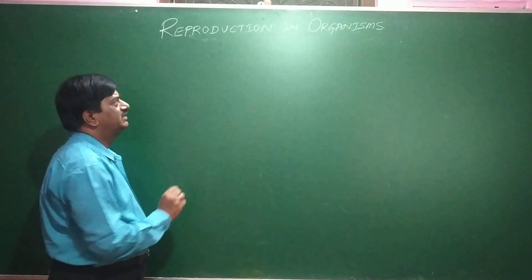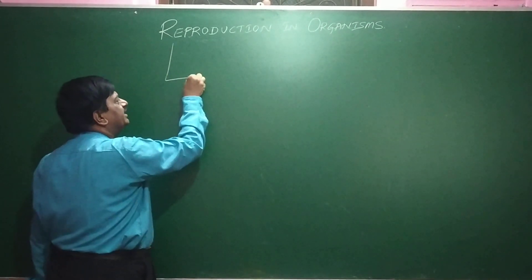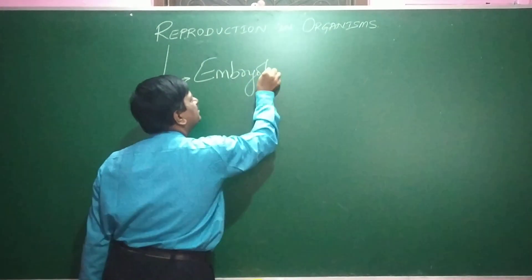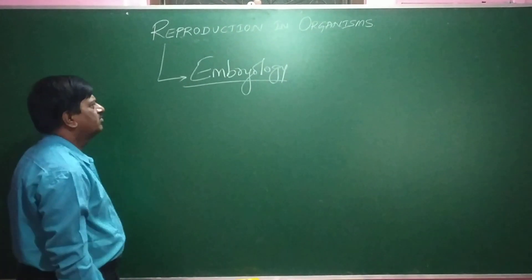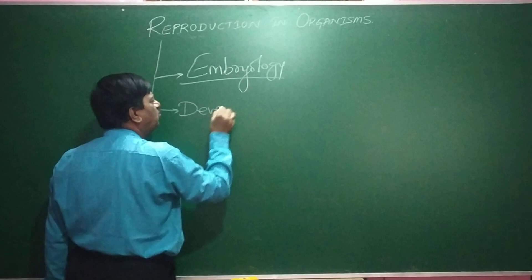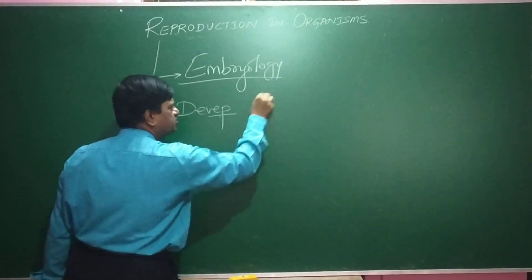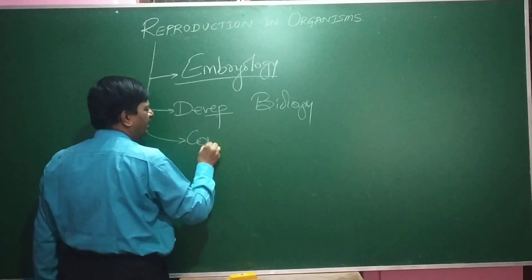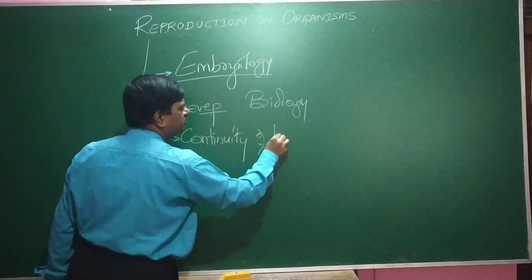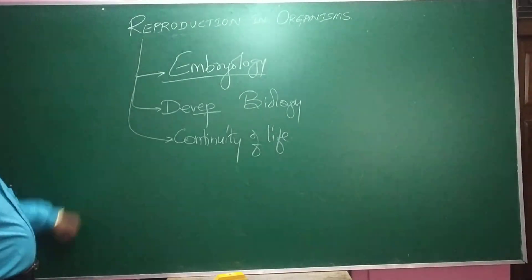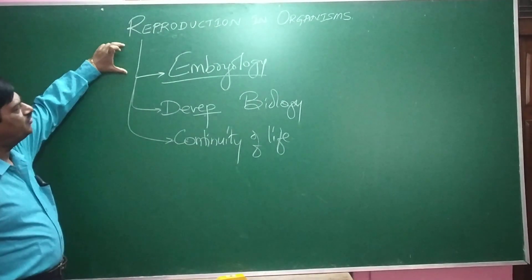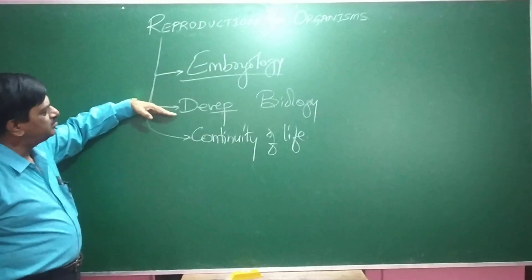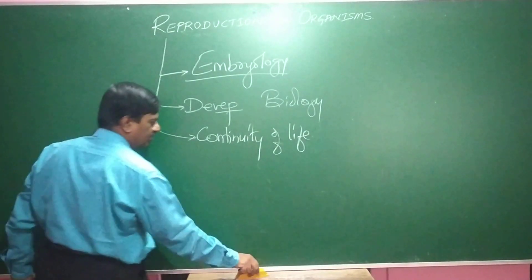Reproduction and the development of the embryo form a separate branch under biology called embryology. This branch is also called developmental biology or continuity of life. So reproduction as well as development of the embryo comes under this separate branch called embryology, developmental biology, or continuity of life.